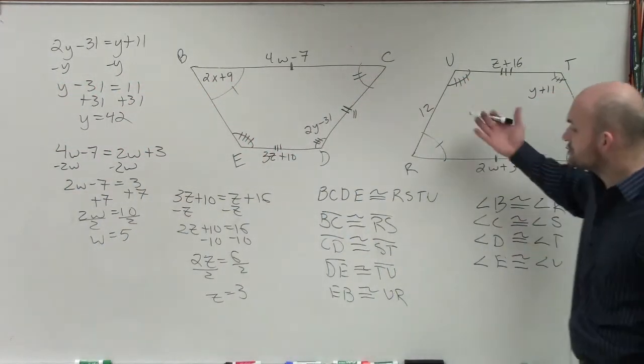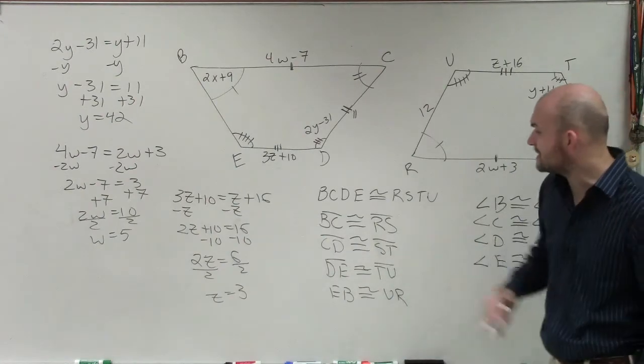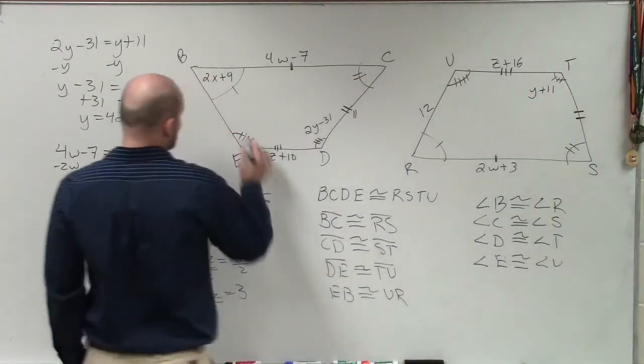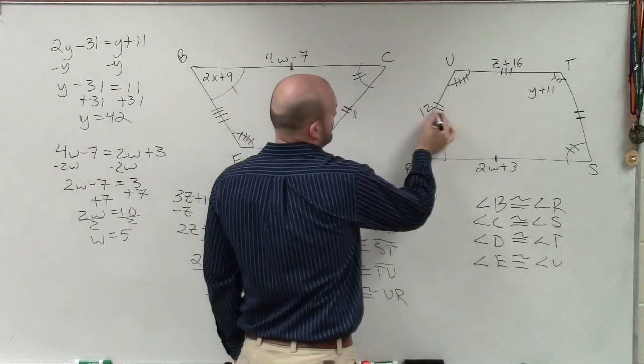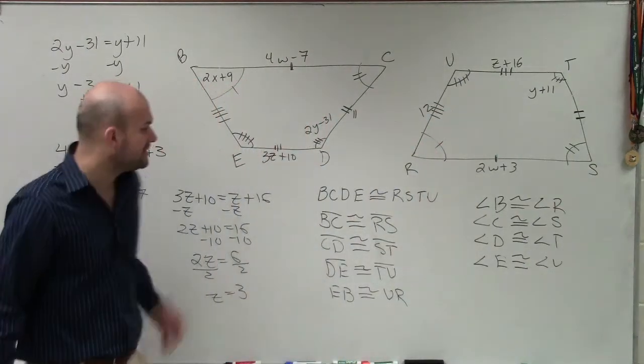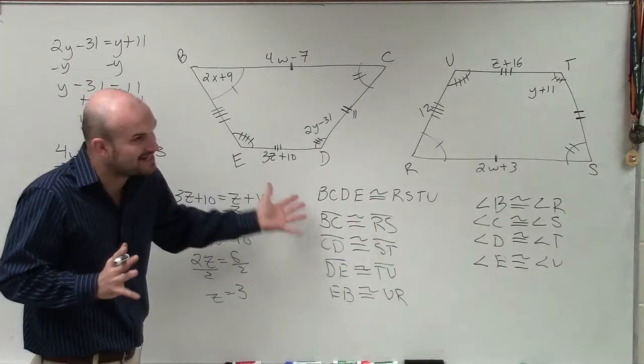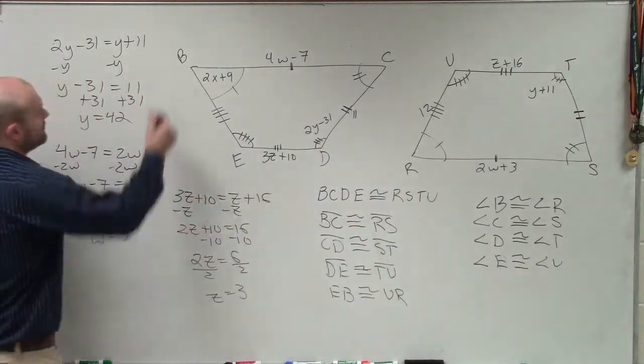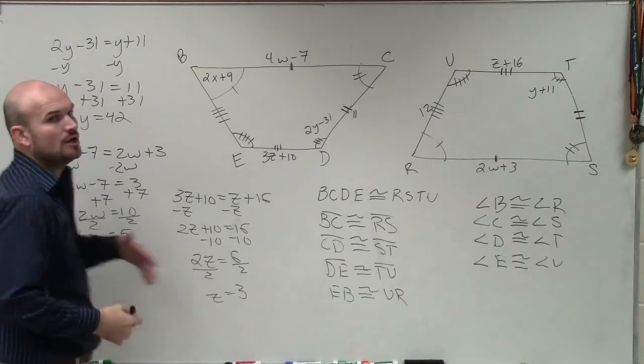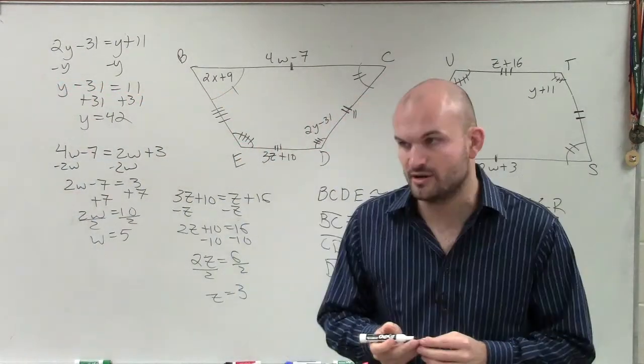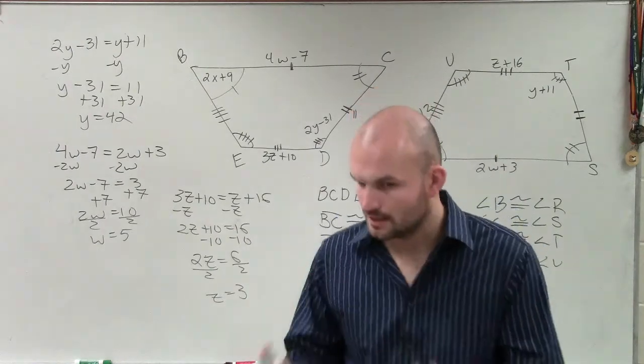Now I've found the measure of each one of these, and if I want to do my last side, EB is congruent to UR. But now you guys can see by finding my corresponding angles and my corresponding sides, I can now see which side lengths are equal to each other. Therefore, I could set an equation to solve for each variable. Done.